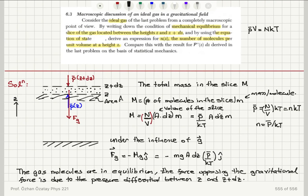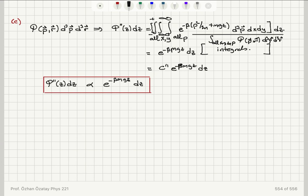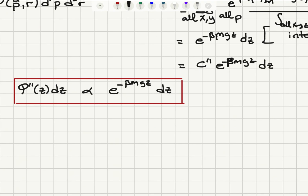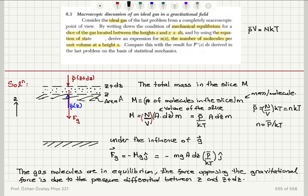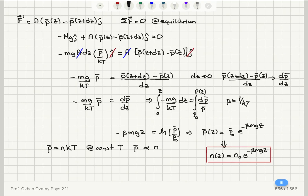The problem also asks to compare this with the probability distribution derived in the previous problem. That probability distribution was P(z)dz proportional to e^(−β·m·g·z)·dz. We find the average number of molecules by multiplying the total number N by the probability density. This result is consistent with the statistical mechanics result from the previous problem.